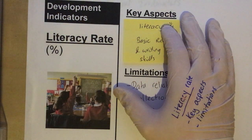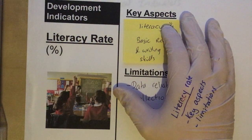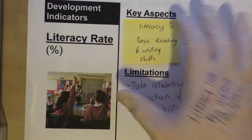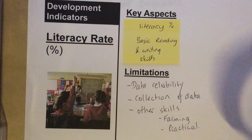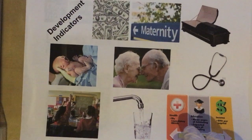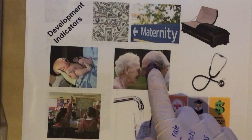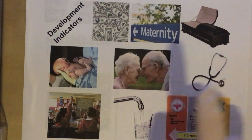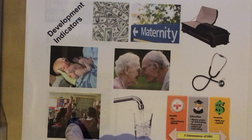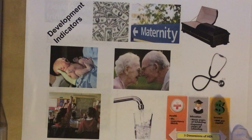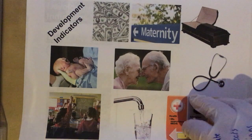Welcome to this episode of White Glove Geography. Today we're going to look at development indicators, and in particular the literacy rate as a development indicator. Previously, in a different video, we had an overview of different development indicators, including GNI, birth rate, death rate, infant mortality, life expectancy, people per doctor, education, reading and writing, access to safe water, and also HDI — a composite development indicator.